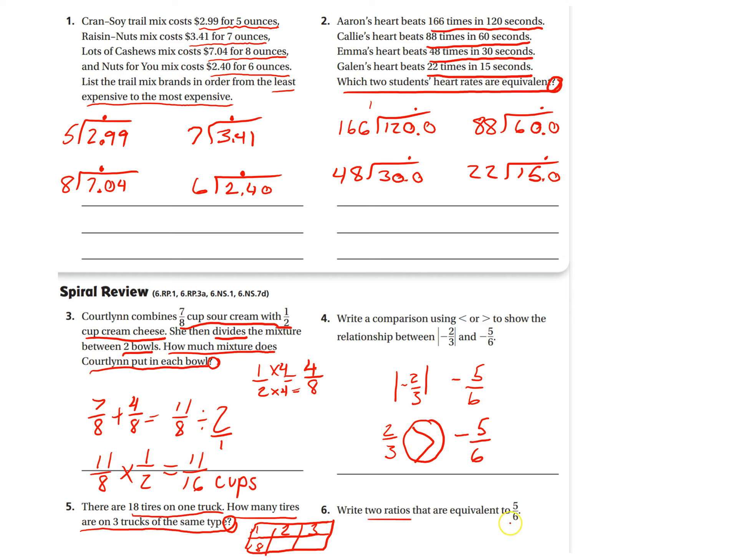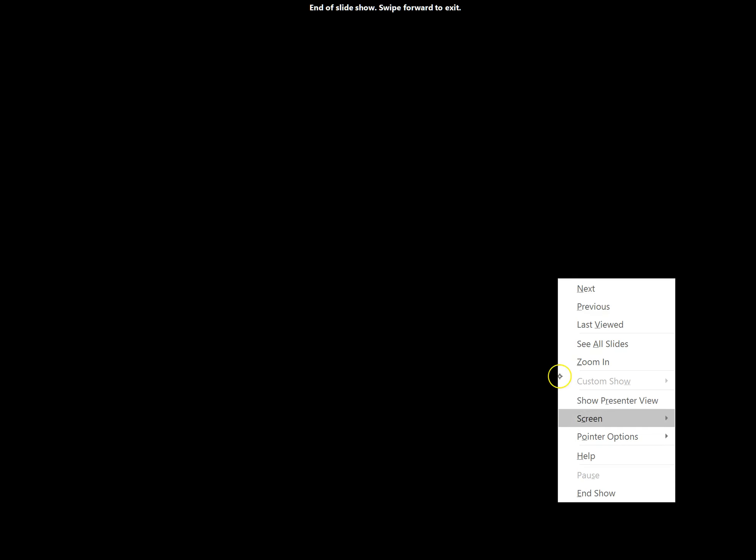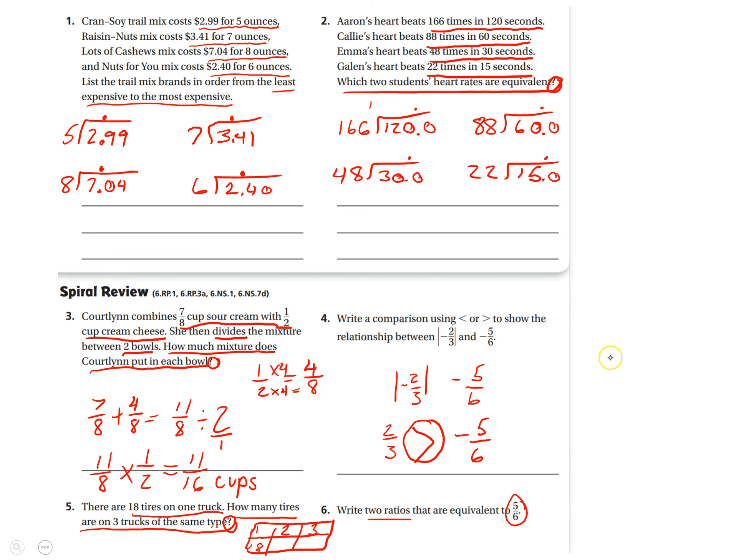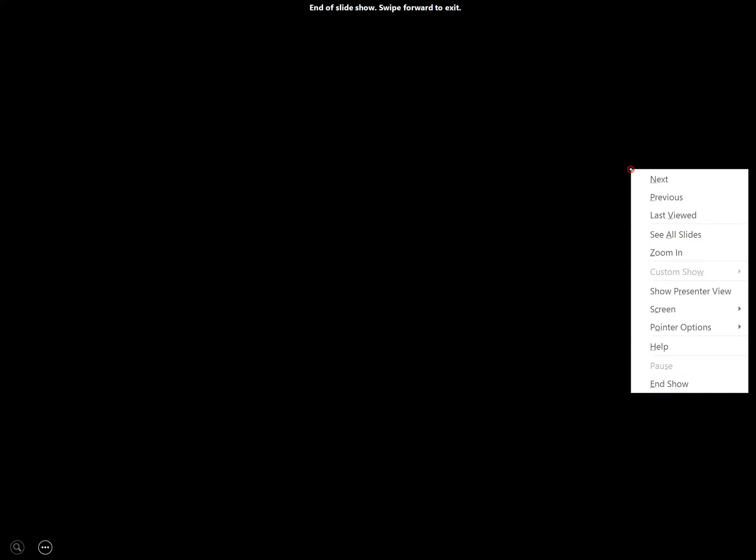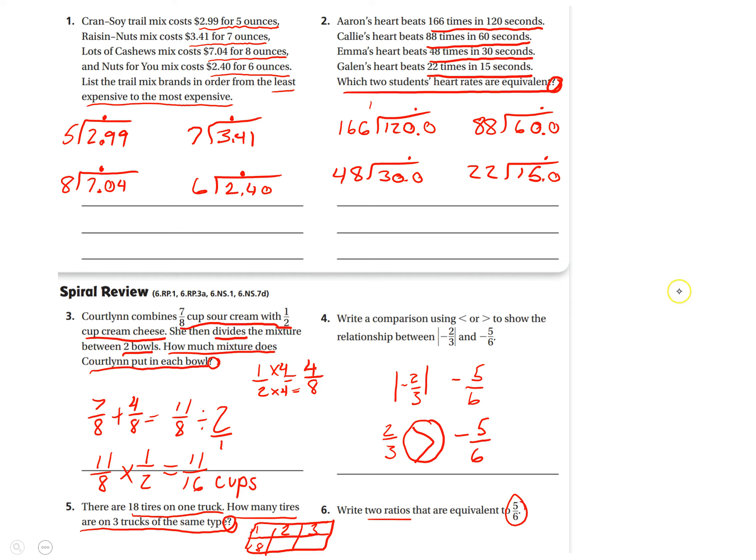Okay. Number 6. Write 2 ratios that are equivalent to 5/6. So, we take 5/6. And you just need 2 equivalent ratios. That's what we've been doing in our math warm-up most days. So, we just pick a number to multiply by. Can't choose 1 though. Let's say I choose 2. That's going to be 10 over 12. That's going to give me 1. And I'll let you find the other one because it does ask for 2. So, this would be 1 equivalent ratio and I'll let you find the second equivalent ratio.